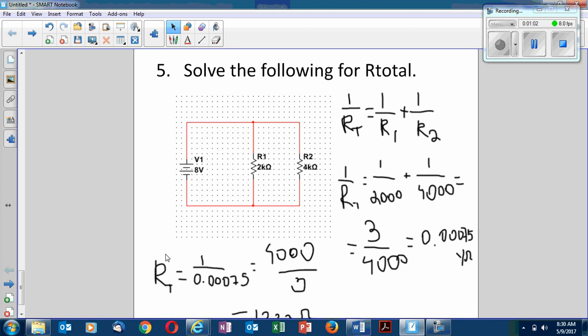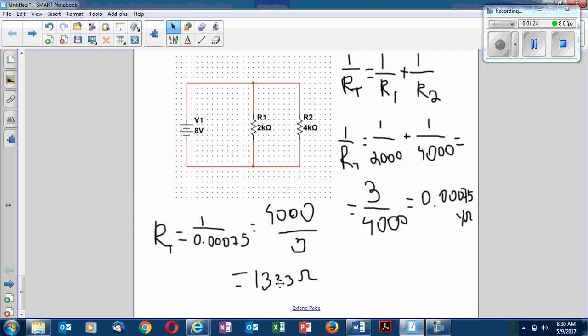Now I have to find the R total. Well, if this is 1 over R total, then R total is 1 over this number. So 1 over 0.0075, or if you like, 4000 divided by 3. That's just that flipped over fraction. It comes out to 1,333 ohms.